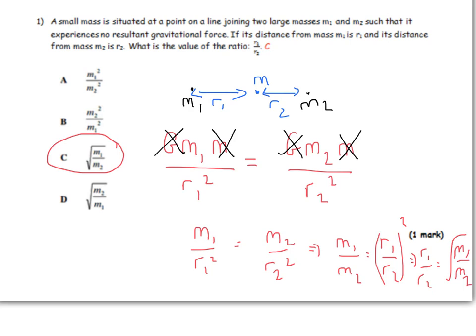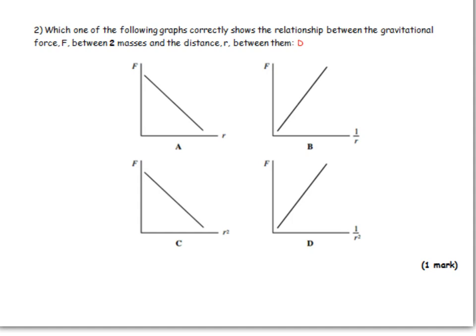So let's move on to the next question. Which of the following graphs correctly shows the relationship between the gravitational force and the distance R between them? Now what you should know from Newton's law of gravitation is force is proportional to 1 over R squared. It's a basic thing, you just have to know that.